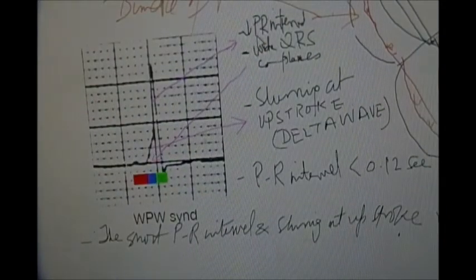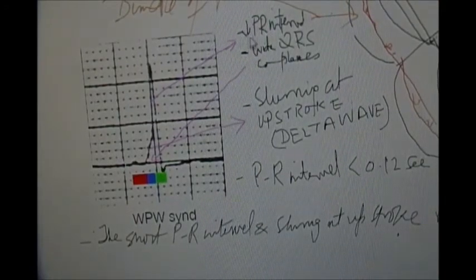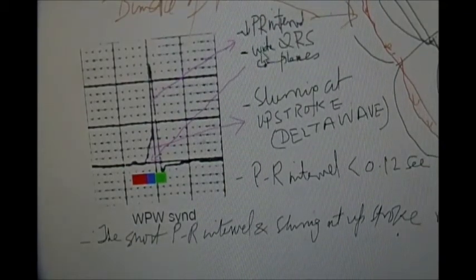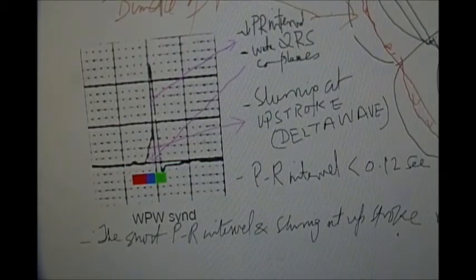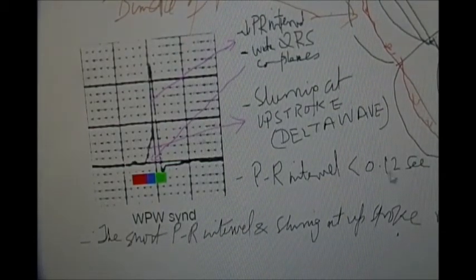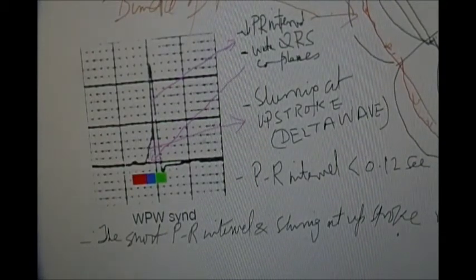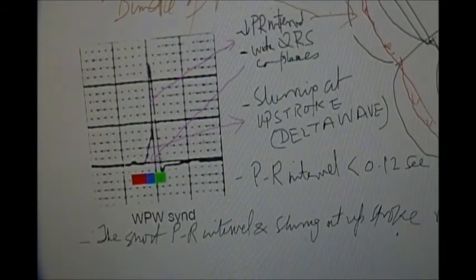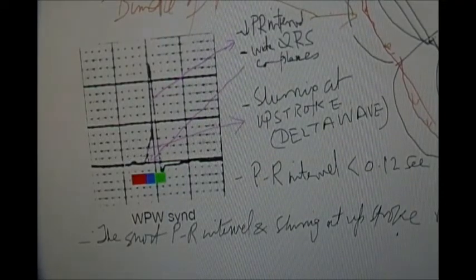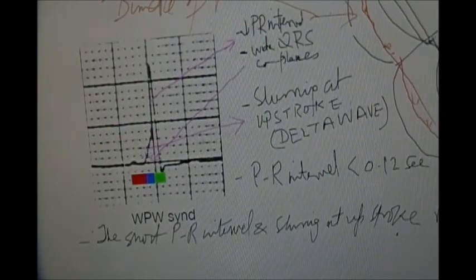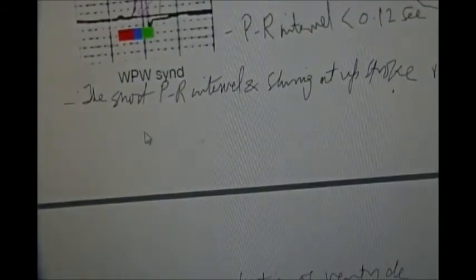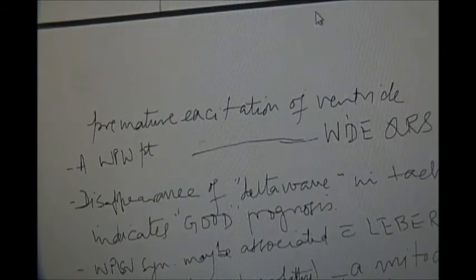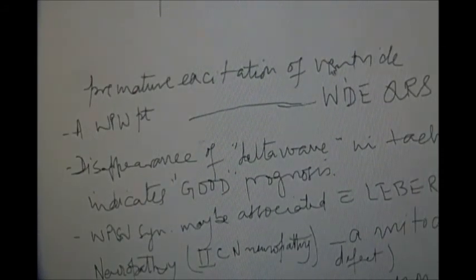What are the EKG findings in Wolf-Parkinson-White syndrome? Number one, the PR interval is shortened and the QRS complexes are wide. The PR interval is less than 0.12 seconds, and there is a slurring at the upstroke, and that is known as the delta wave. The short PR interval and the upstroke are due to the premature excitation of the ventricle.